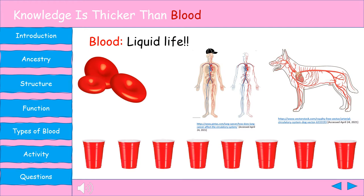Good morning. Today we're going to be going over mammalian blood. Our presentation is titled 'Knowledge is Thicker than Blood.' Right now, flowing through your body is about five liters of blood carrying nutrients and helping get rid of wastes. To put that into perspective, that's 16 cups of blood in your body. 16 cups of blood plays a really important role in your everyday life, as well as many other organisms. After many years of evolution, blood has evolved differently for different organisms depending on their needs.